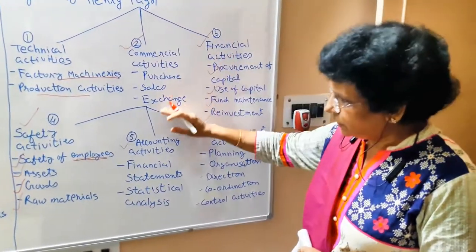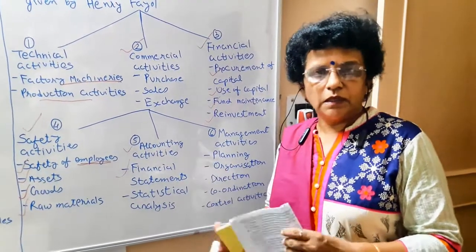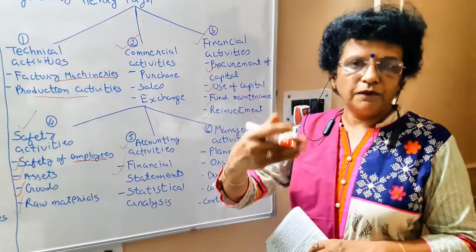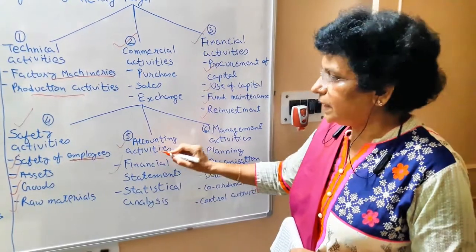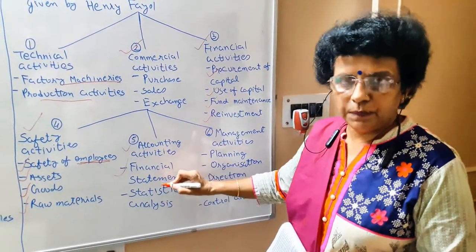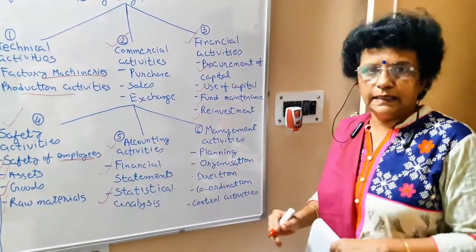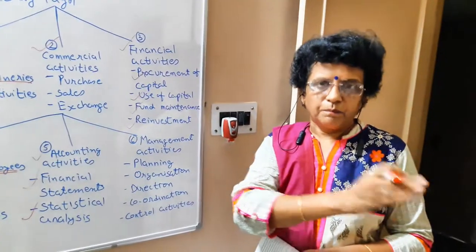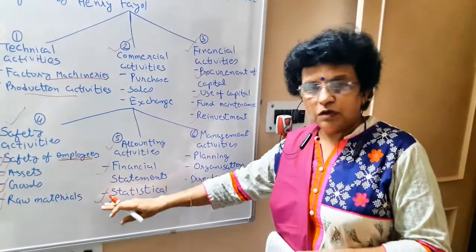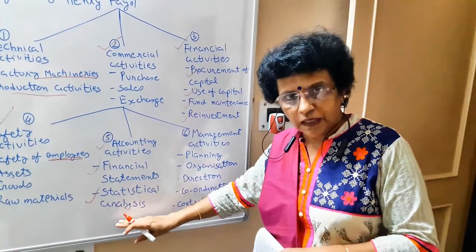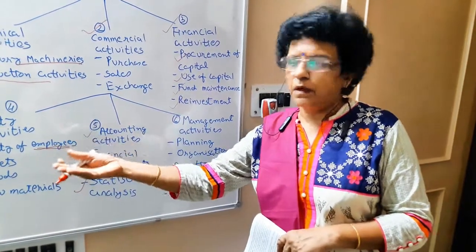Number five: accounting activity. Management must prepare financial statements — as commerce students learn, how to prepare final accounts, find gross profit, net profit, and assess financial stability of business. These financial statements are to be presented to all those interested in management review. Second, statistical analysis — comparison of present and past data, finding the trend of whether business is rising or in downfall. The figures derived by accounting must guide management in dealing with future problems.